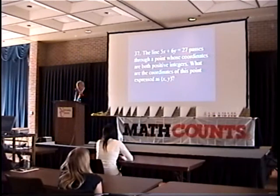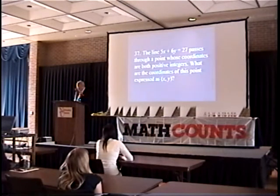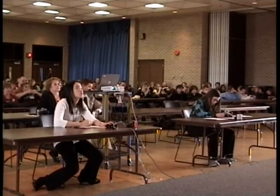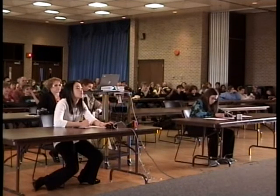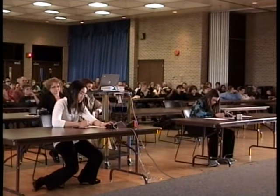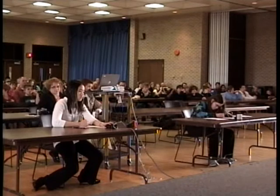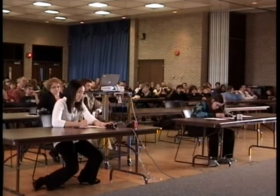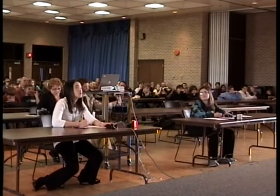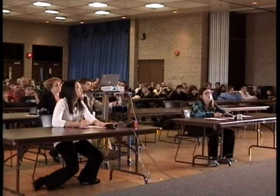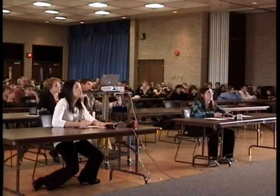The line 5x plus 6y equals 27 passes through a point whose coordinates are both positive integers. What are the coordinates of this point expressed as (x, y)? Ingrid? My answer is (3, 2). 3-2 is incorrect. I said 3-2. Oh, you said 3-2? I did not hear her. Did you say 3-2? 3-2 is the correct answer.